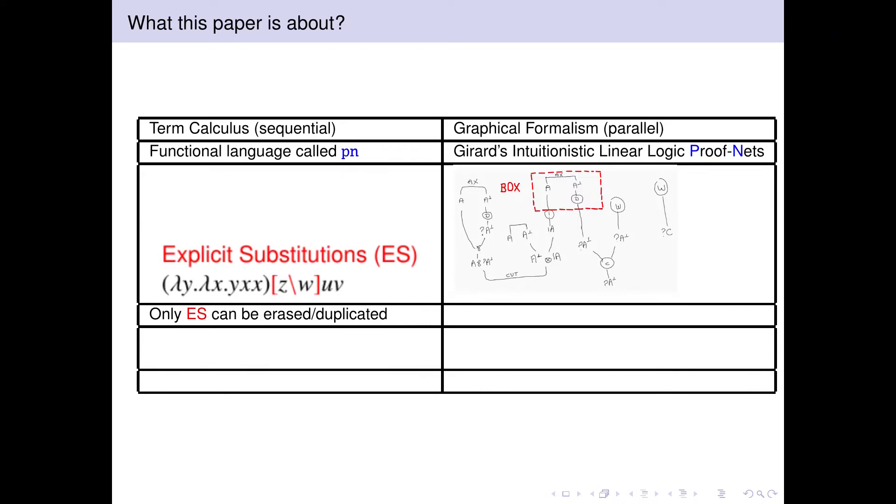The idea is that in the term language only explicit substitutions can be erased or duplicated, and in the graphical formalism only boxes can be erased or duplicated. So there is a clear and intuitive link between explicit substitutions on one side and boxes on the other side.